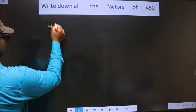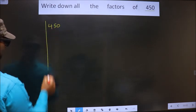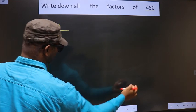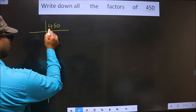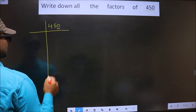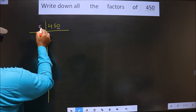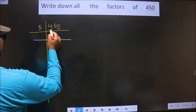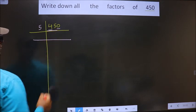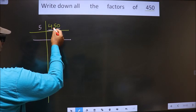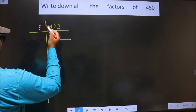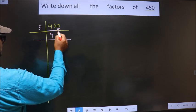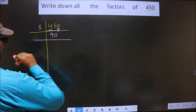Starting with 450 — the last digit is 0, so we take 5. The first digit is 4, which is smaller than 5, so we take two digits: 45. When do we get 45 in the 5 times table? 5 nines are 45. Write the 0 down. Next, the last digit is again 0, so we take 5.